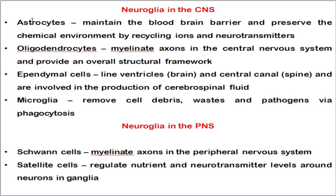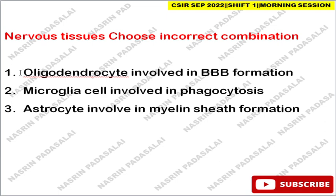The next question is about the nervous system glial cells. In the CNS: astrocytes maintain the blood-brain barrier; oligodendrocytes myelinate axons; ependymal cells line the ventricles and central canal and produce CSF; microglia are involved in phagocytosis. In the PNS, Schwann cells perform myelination. The correct option highlights that oligodendrocytes are involved in myelin sheath formation, microglia are phagocytic, and astrocytes form the blood-brain barrier.